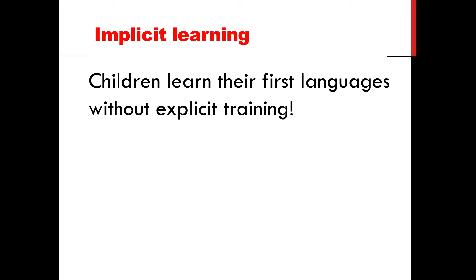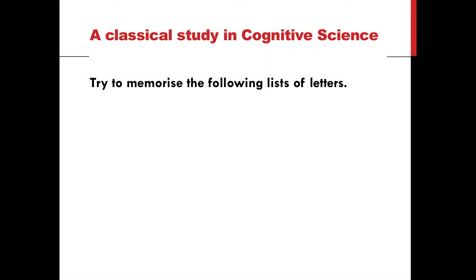Another important thing we have to consider is the fact that children learn their first language without any explicit training. Basically, we talk to them, we play with them, but obviously we don't teach them any grammar, we don't teach them any words when they are very little — we just try to have fun with them, and there's no specific explicit training. This brings us to the idea of implicit learning.